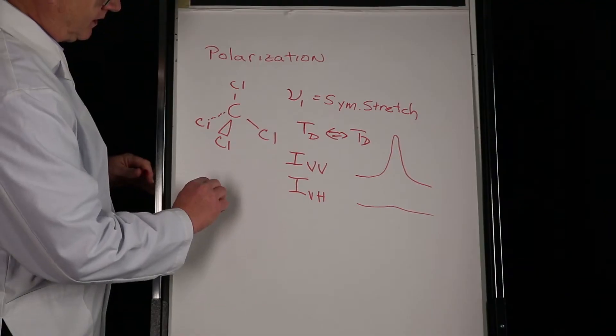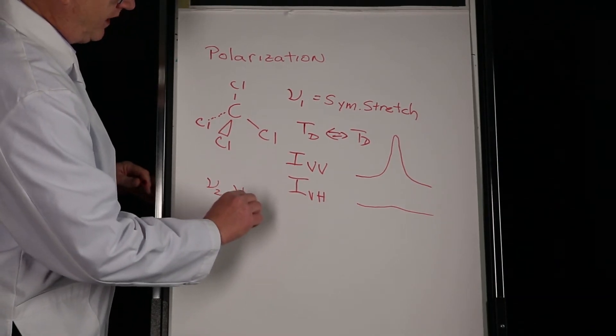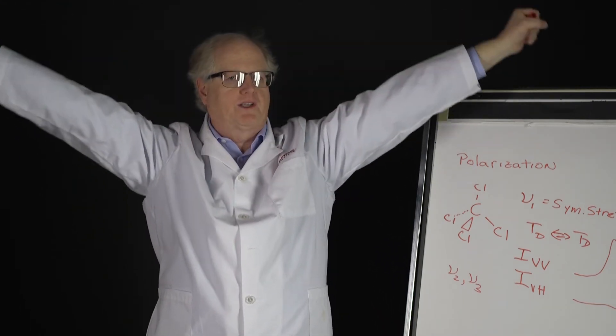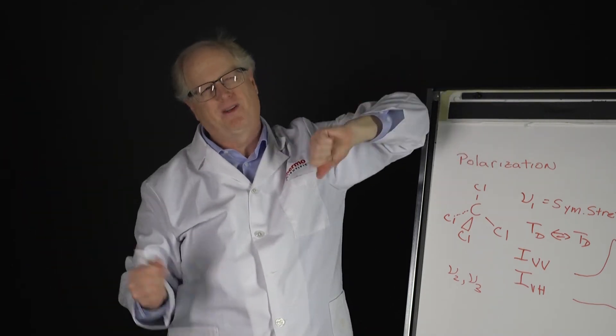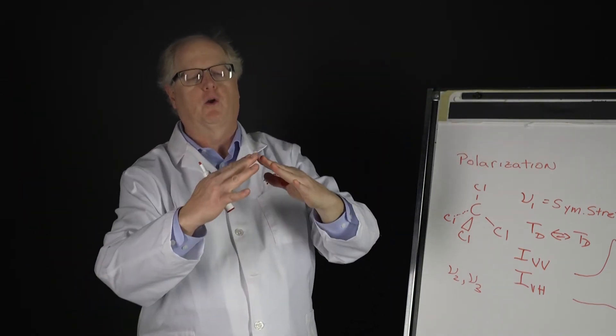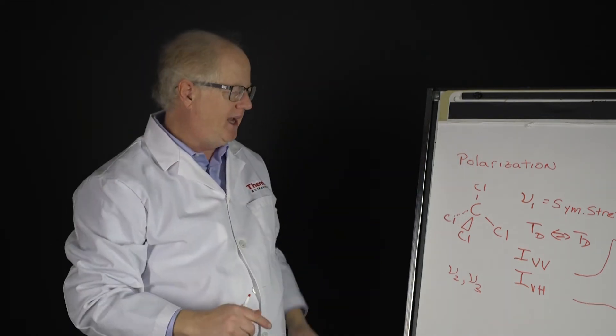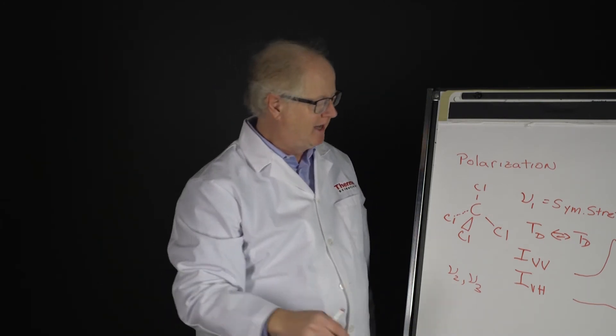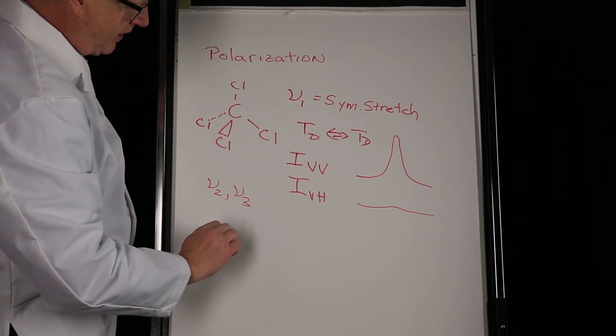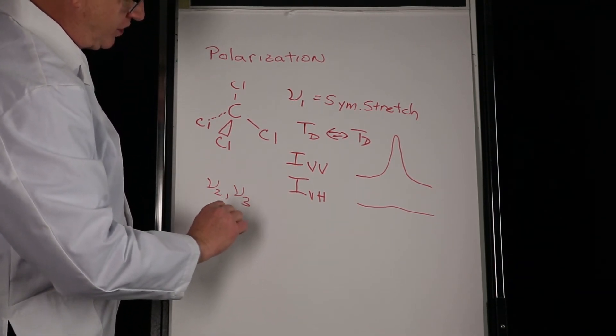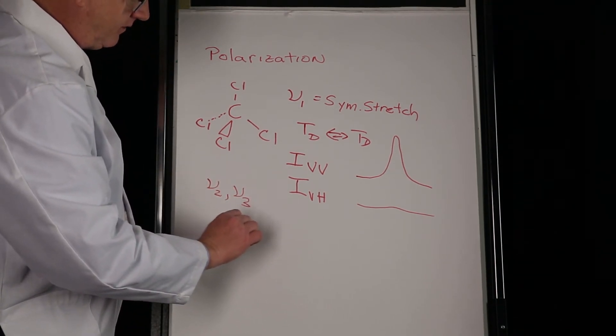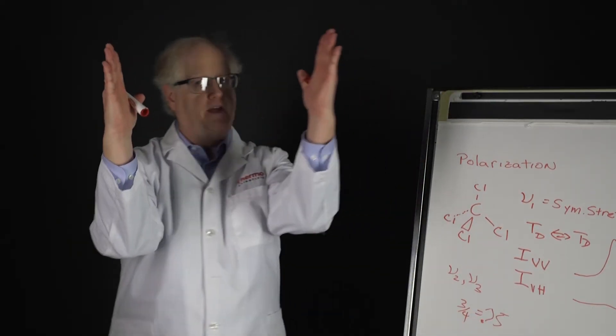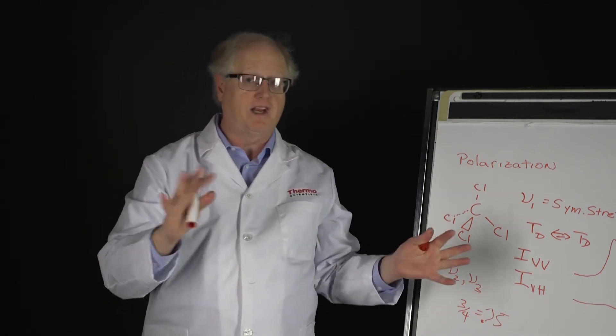On the other hand, another motion of this, ν2 and ν3 of this molecule, involves scissor kicks where two of the chlorines come together, the other two come together, or there's sort of an umbrella stretch where the three chlorines come up, one goes out. In both of those cases the symmetry is broken. The molecule is no longer a tetrahedron. And because of that, ν2 and ν3, if you look at those two, the ratio of the polarization is three-fourths or 75%, 0.75, between this and this. That's a standard number.